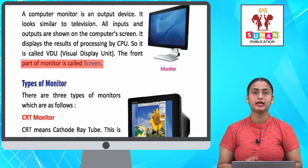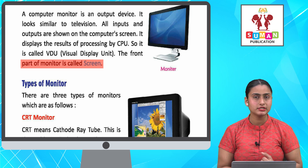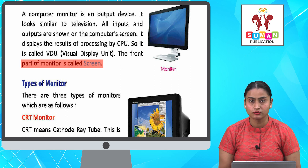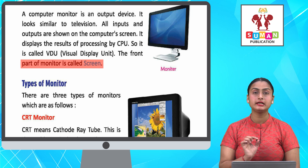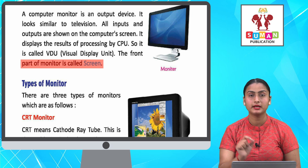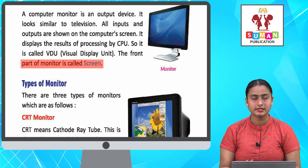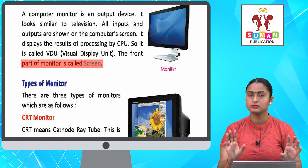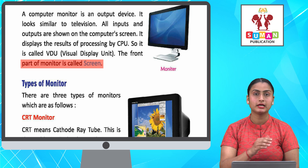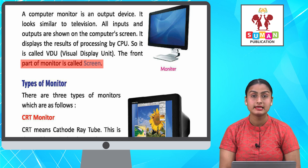Computer ka ek output device hota hai — iska matlab yeh hota hai ki jitni bhi aap inputs dete hain, output jo aapko aata hai, wo sari cheez aapko monitor ke screen pe display ho jati hai. Isi liye isko VDU bhi kaha jata hai, yaani Visual Display Unit. Monitor bilkul television ki tarah dikhai deta hai. Monitor ka jo front part hota hai jis mein sari cheez display hoti hai, usko kehte hain screen.